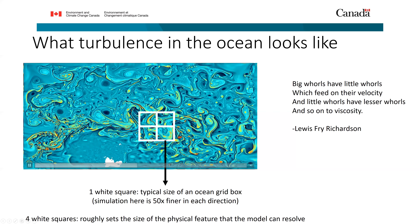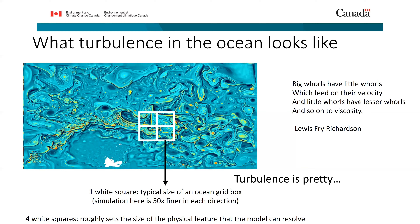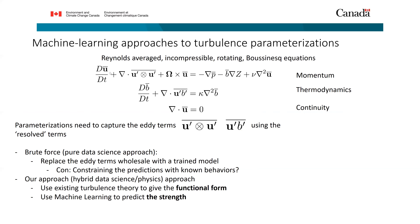Stepping into the equations: the governing equations for ocean circulation contain eddy terms — the 'prime' terms — and mean flow or resolved flow variables indicated with an overbar. So ū is a term resolved by the model, while the u′ terms represent what turbulence is doing that coarse-resolution models can't directly represent. If you just zero out those terms — which is what a coarse-resolution model effectively does — you're missing a fundamental part of the equation.